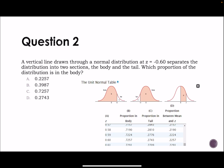It says a vertical line drawn through a normal distribution at z equal to negative 0.60 separates the distribution into two sections, the body and the tail. Which proportion of the distribution is in the body? So since we're dealing with a negative z-score, that's this center picture here. Notice that the body here is in B, so we're going to look in column B. We're going to find our 0.6 and remember when we're looking at our chart we're going to drop that negative and just look for 0.6. The reason we're doing the B is because that's the body of it which is right here. So our answer is that guy right there which happens to be C.